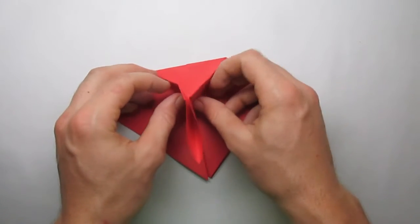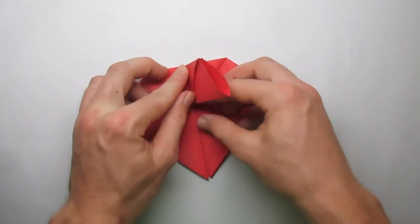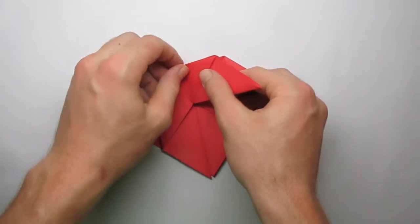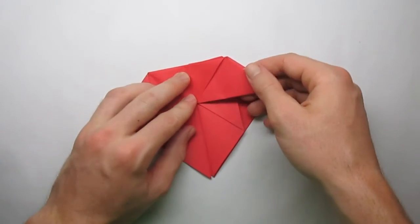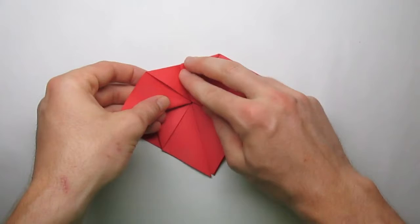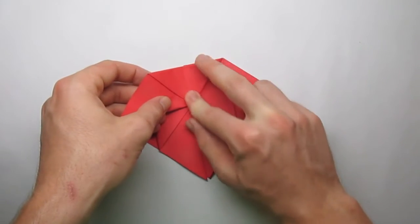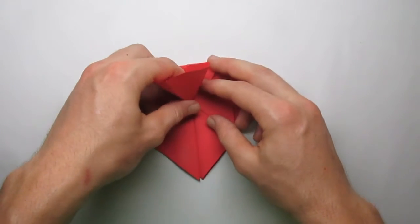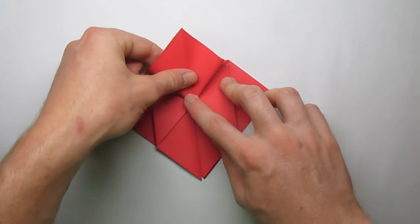Now using the creases we've already made, we're going to bring it together, fold it over to the side, and do that this way too. So now we're going to squash fold it, just like this.